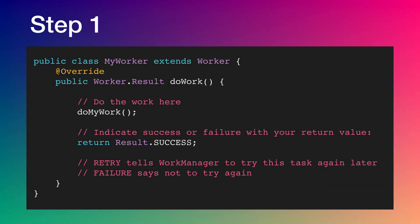In step one, we have a class MyWorker which extends from the Worker class, and we've overridden one method — the doWork method. In this method, we write the logic of our task, perform the task, and then return the result of the work. The result could be success, failure, or retry. Success means the work is complete. Retry tells WorkManager to retry the task at a later time. Failure means never to retry this task again unless our app needs to use it again.